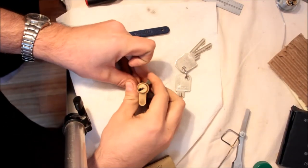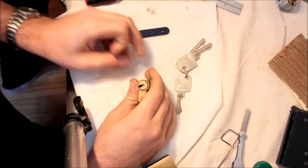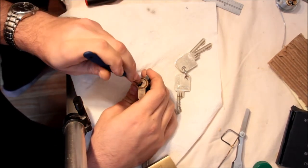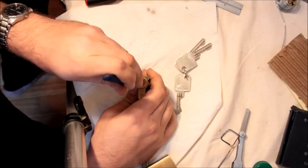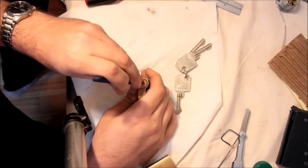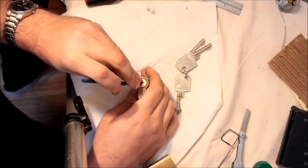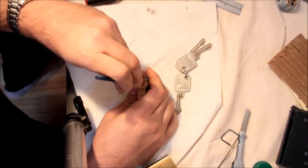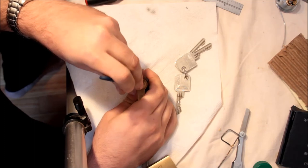So, what I'm going to do is, I could use a tensor, but I'm just going to use the cam to manipulate it to turn the plug. And the particular sidebar is driven by a little springy thing right on the side of the keyway on the right.